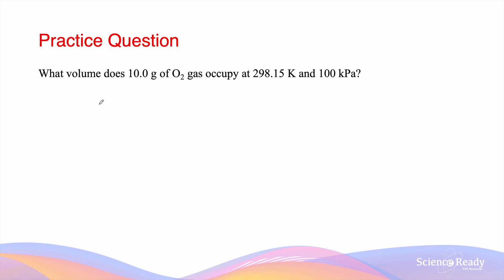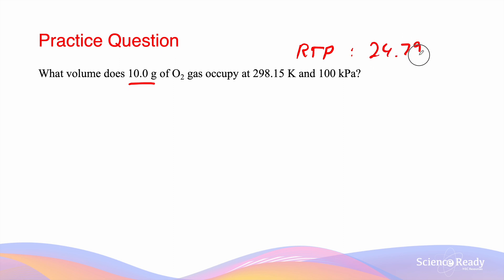This next question asks us to calculate the volume of a gas given its mass. We're also given that it is at RTP. What we need to find out is ultimately the number of moles of O₂ gas, because once we've found that we can multiply it by the molar volume at RTP, which is 24.79 liters per mole, to work out the volume of gas.